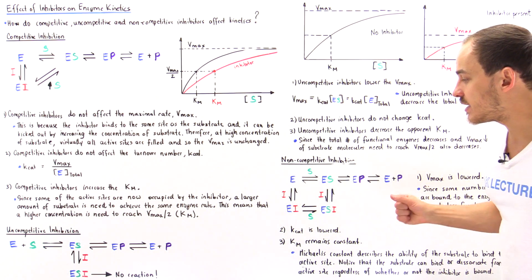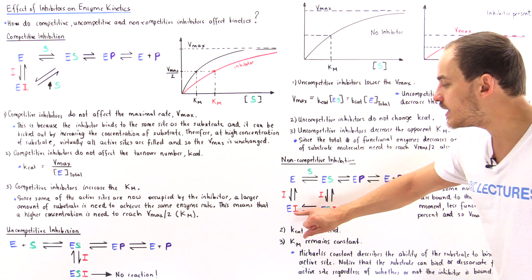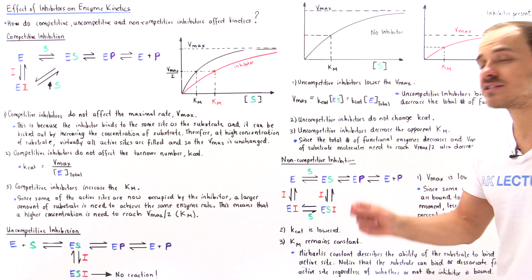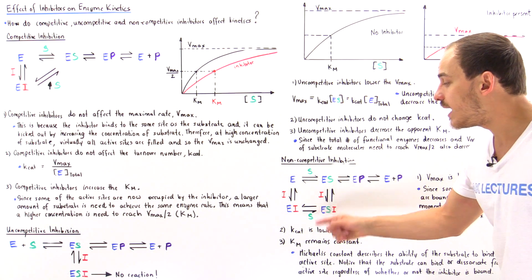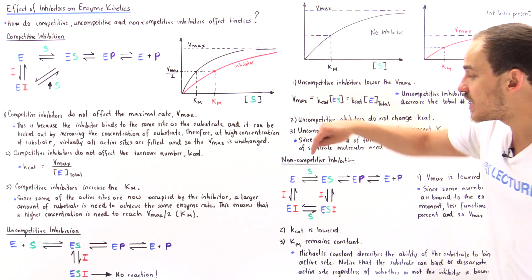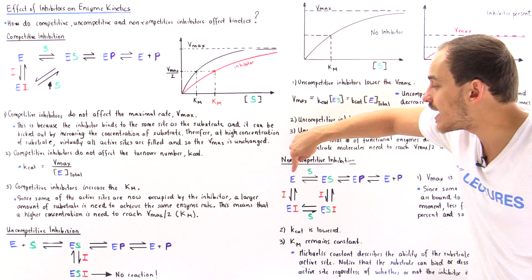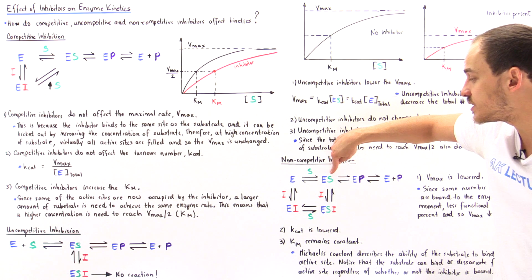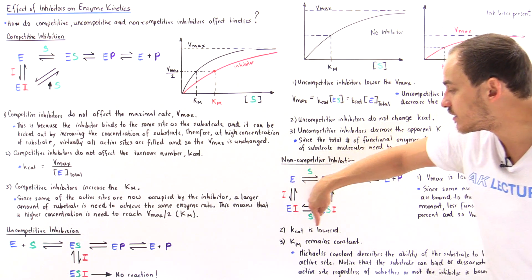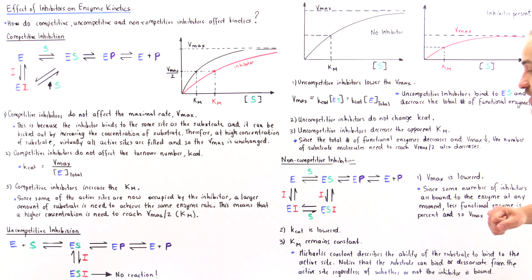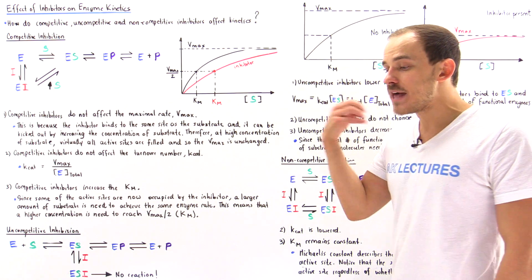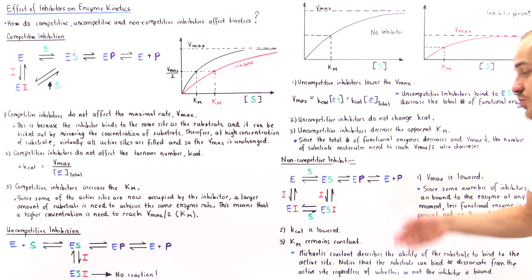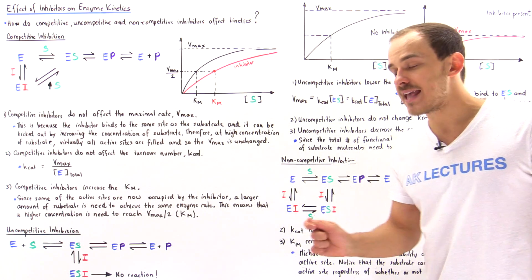So we see that in this particular equation, if we have the inhibitor bound onto that enzyme, the substrate is just as likely to bind onto that enzyme as it is to bind in the absence of that inhibitor. So this reaction takes place just as likely as this reaction takes place. And because of that, the affinity of that particular substrate for the active site does not change, and so K-M remains the same.